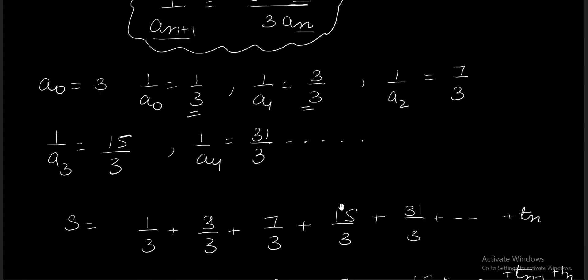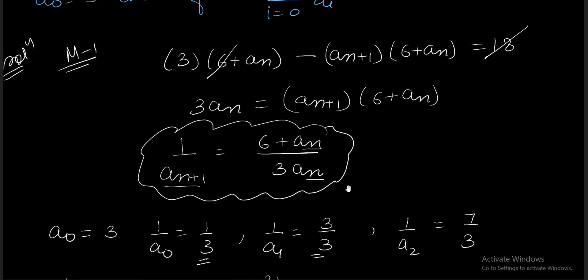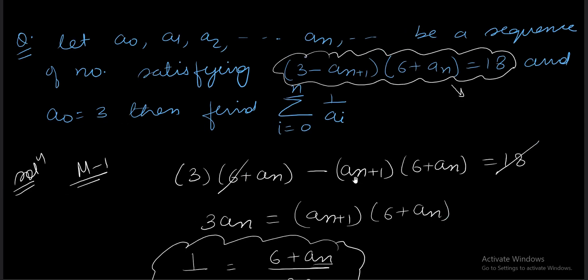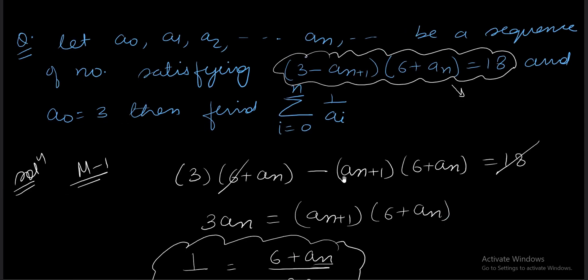This is the answer we are getting. Here we started with finding out the general term of 1/a_n. We initially found some terms, then used the method of difference to get the nth term. Once we got that, we just put the values to get our answer. This is one approach. Now I am going to discuss another method.